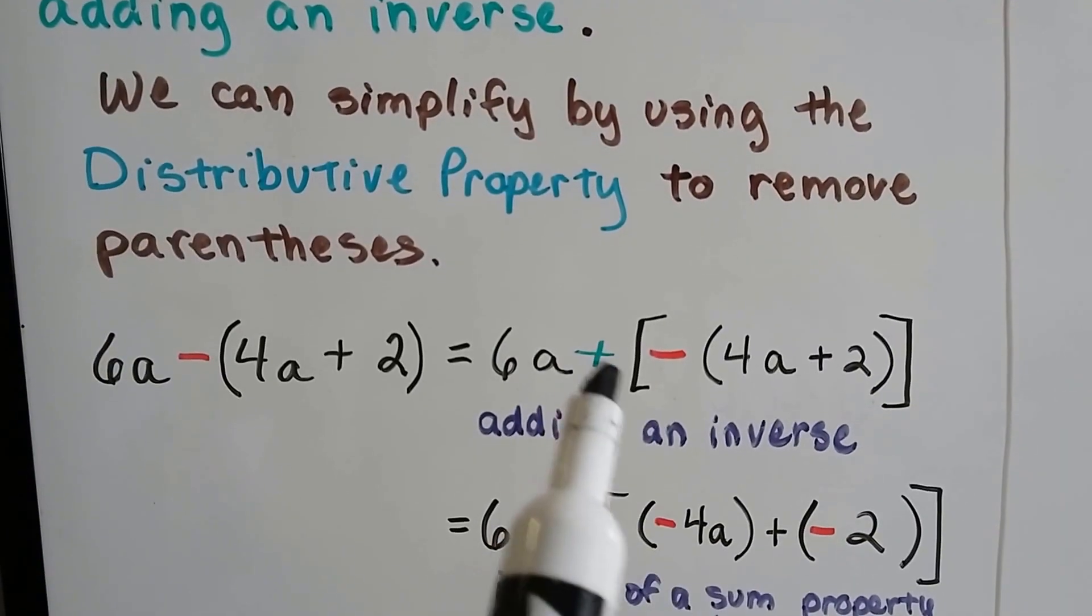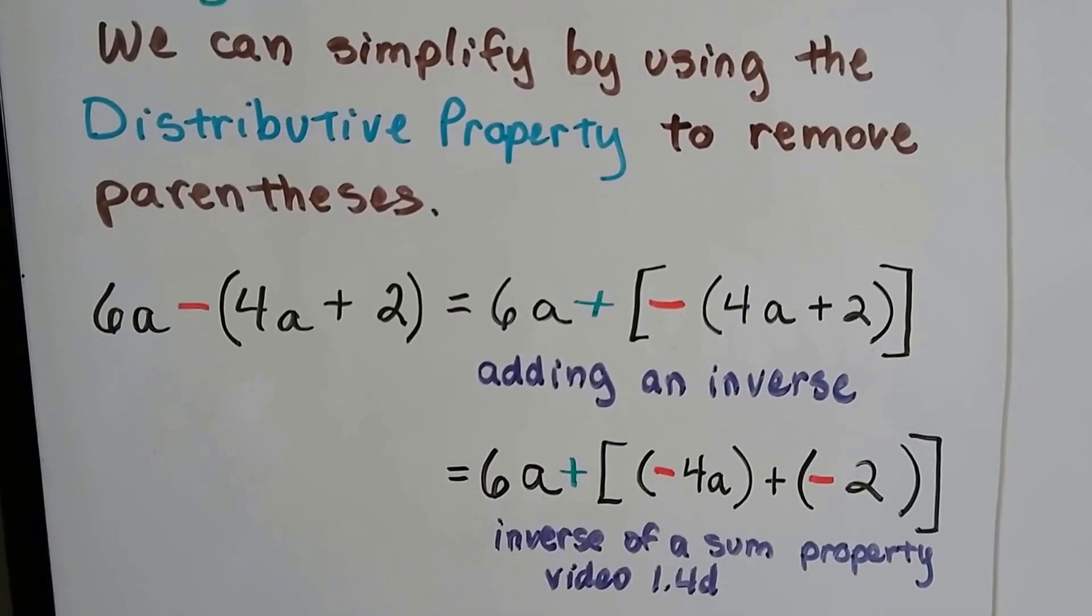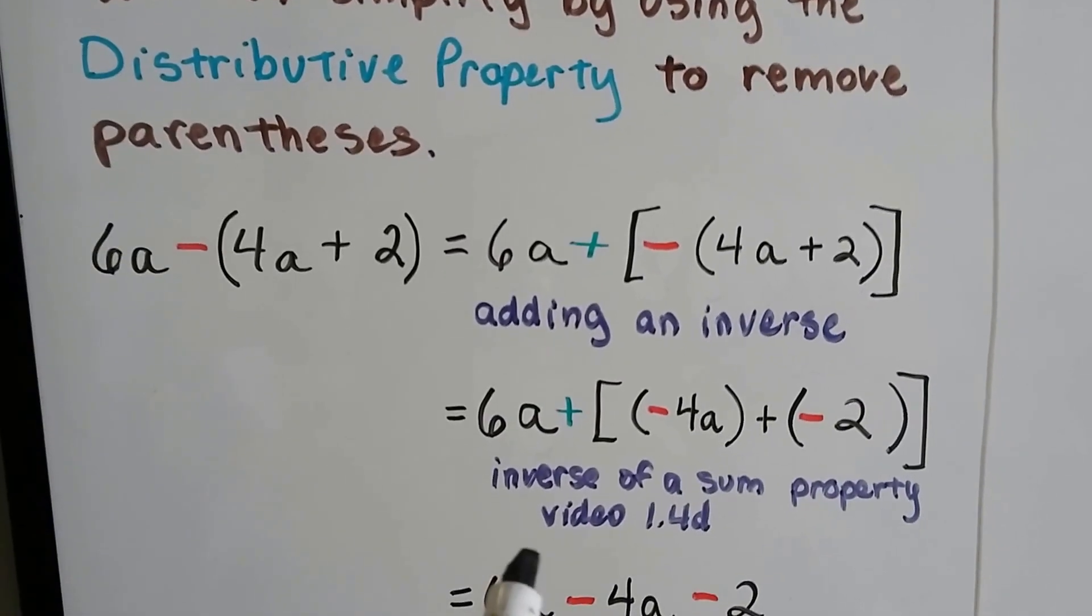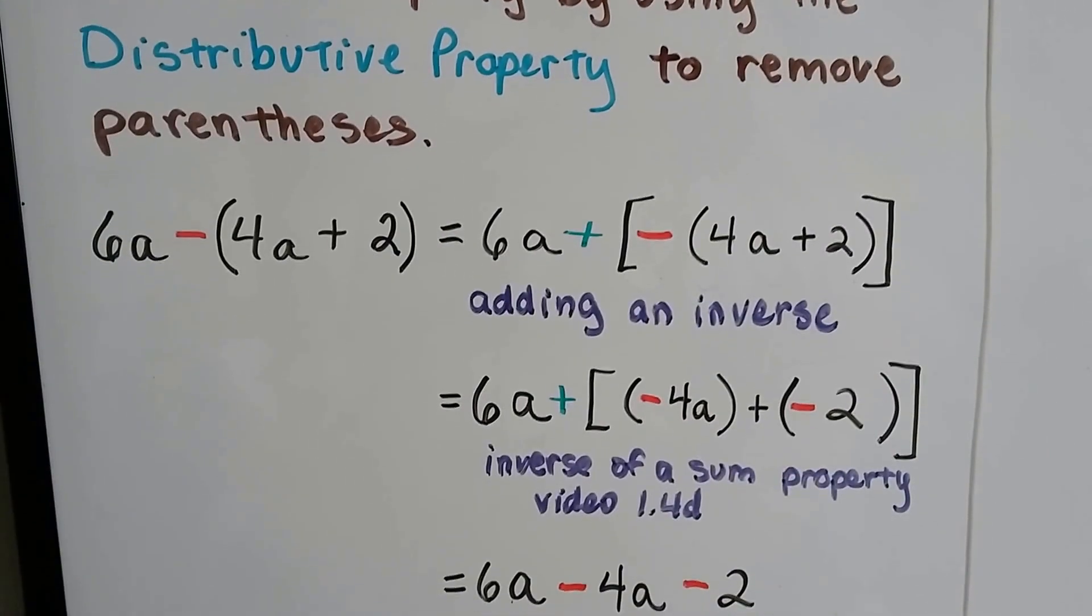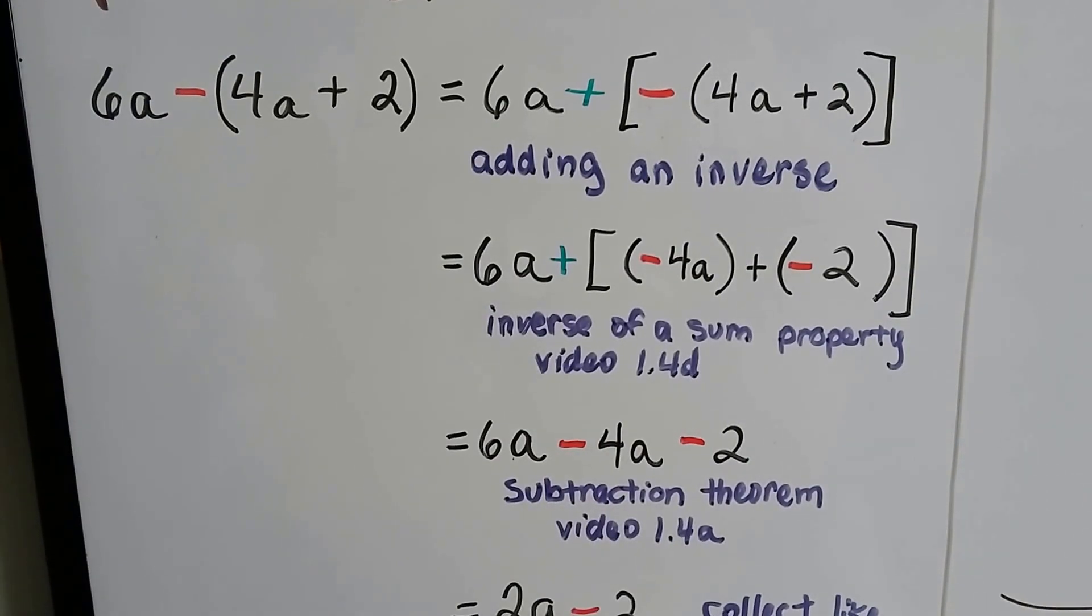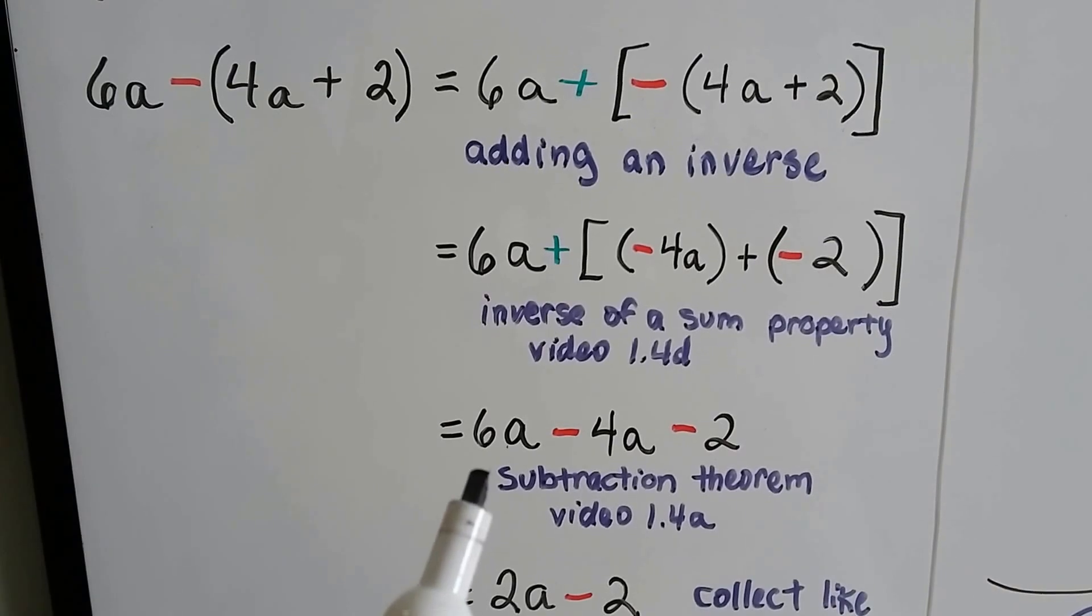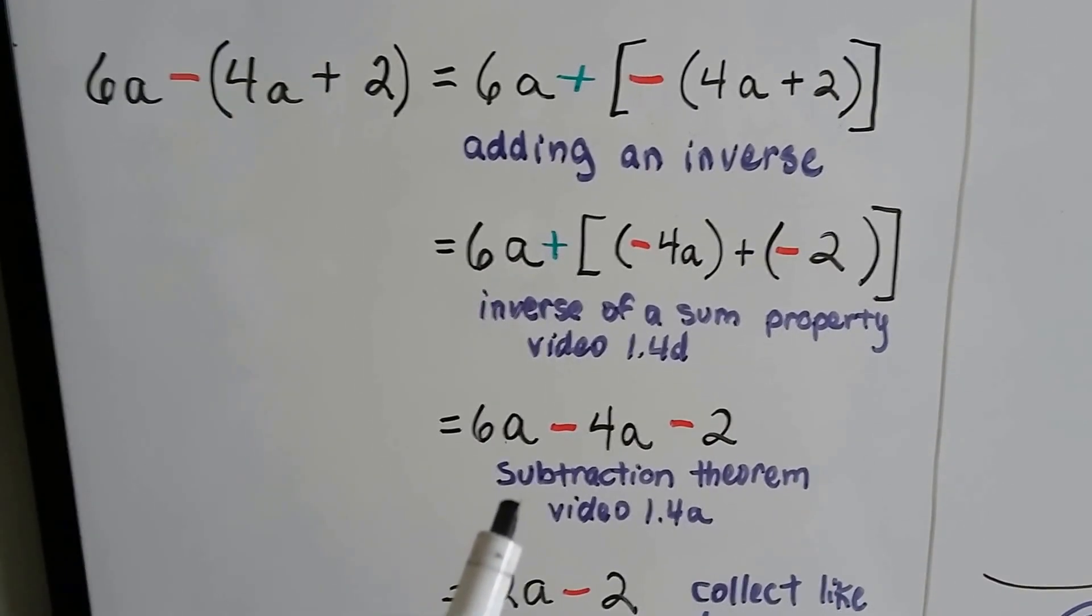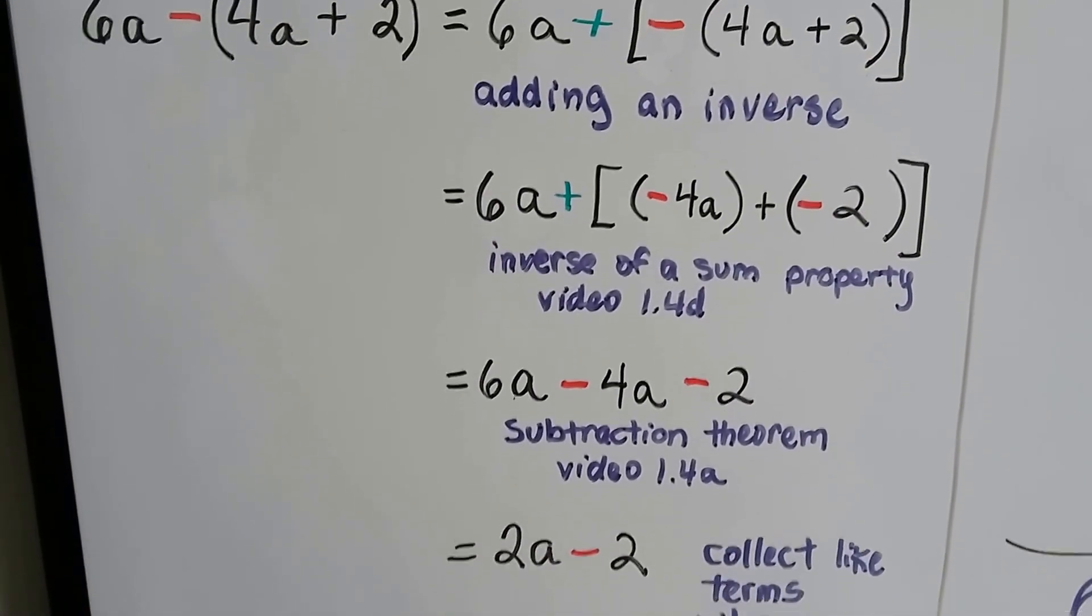We're just adding the inverse. We're adding a negative. The inverse of a sum property makes it, so it's a negative 4a plus a negative 2. That was from video 1.4d, and there's a link to that video in this description if you want to watch it.